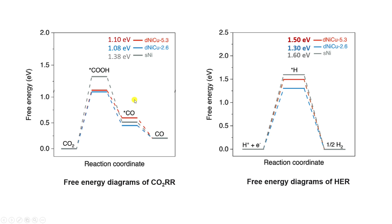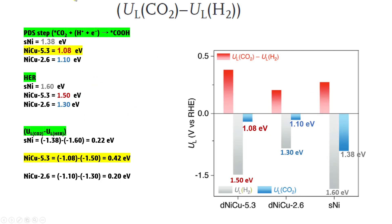Using these values we can calculate and measure the selectivity of CO2RR versus HER. The formula is: UL(CO2) minus UL(H2), where UL means the limiting potential. In the plot, the blue line and the gray line represent the limiting potentials for CO2RR and HER respectively.